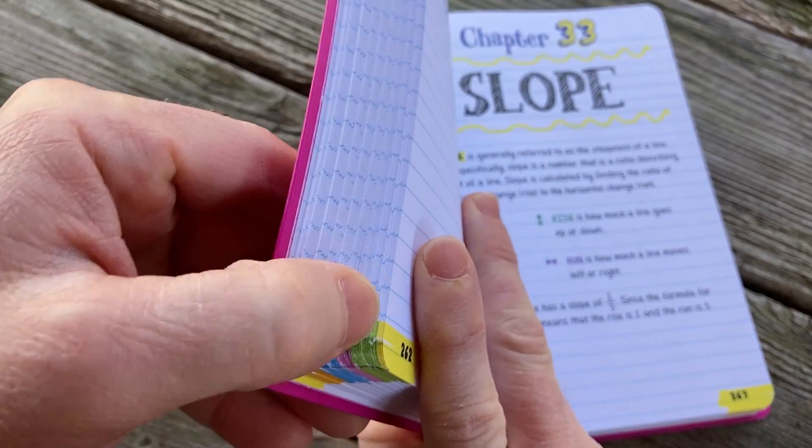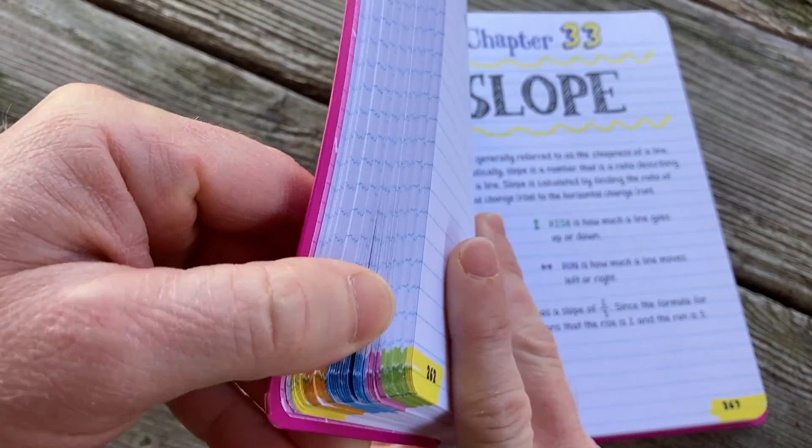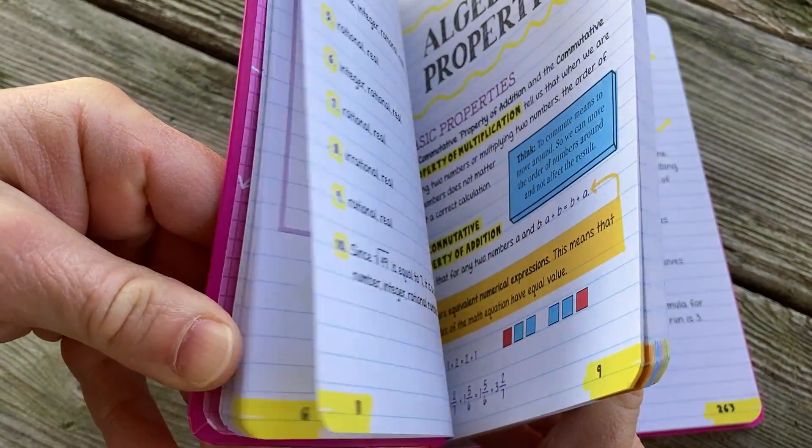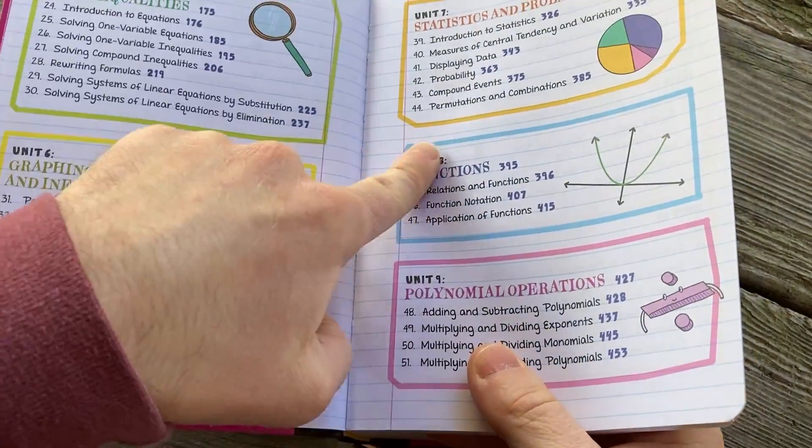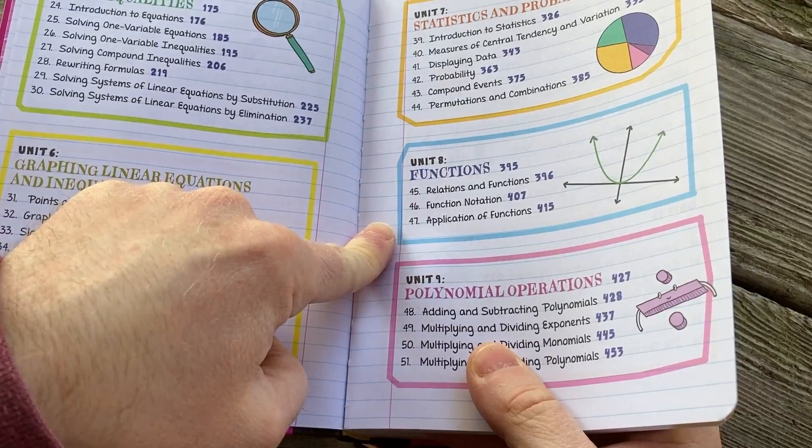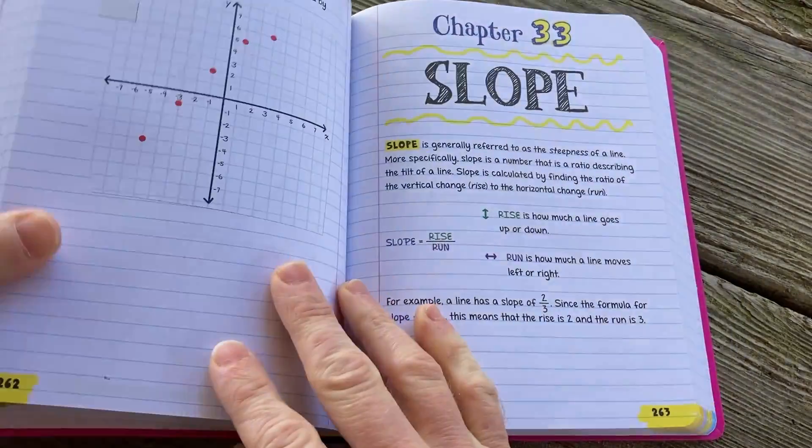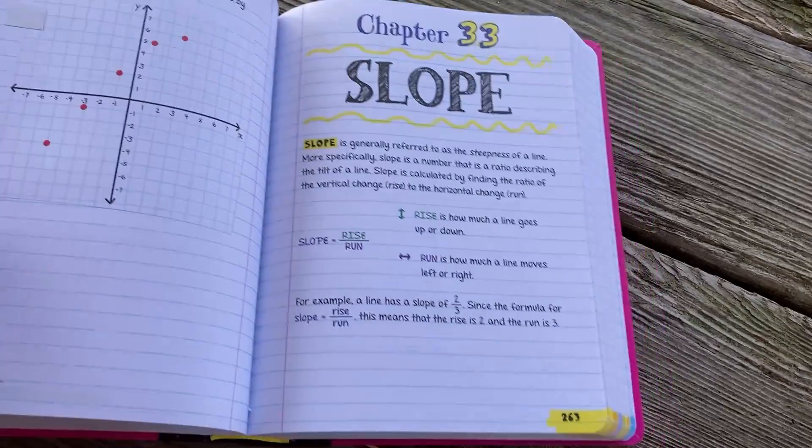You see this? They're color-coded, the chapters. So like, oh I'm in the purple area, or oh I'm in the green area, so you know how to find the different chapters. And look, it's color-coded here too. See that blue? So you can go to the blue and then you're in that area. So kind of fun. All right, let's see what it says about slope.